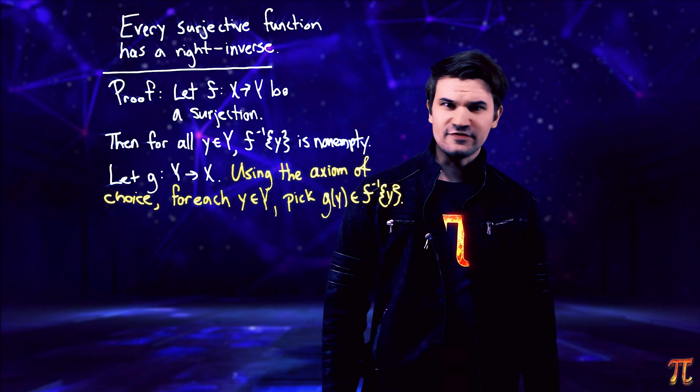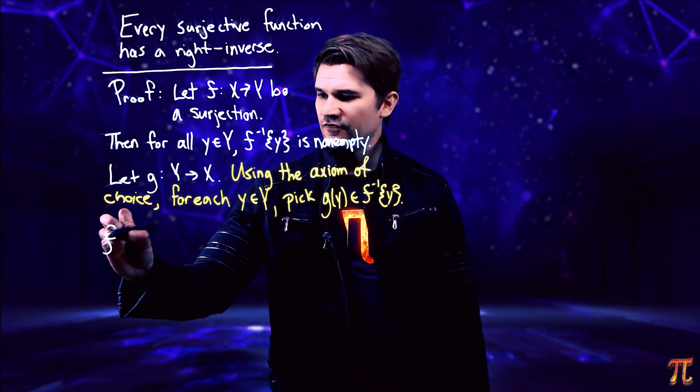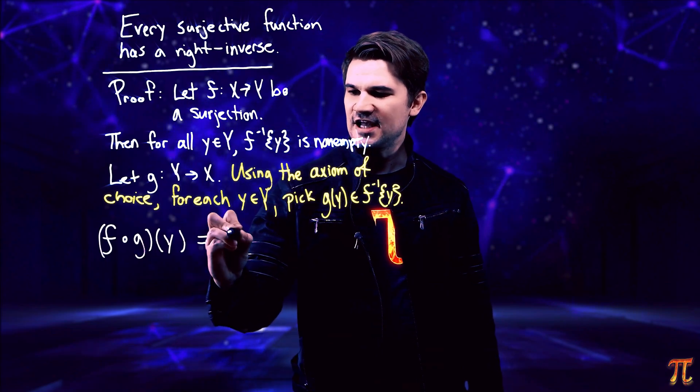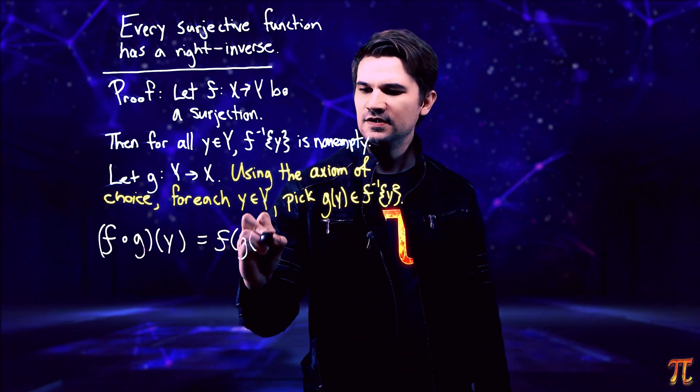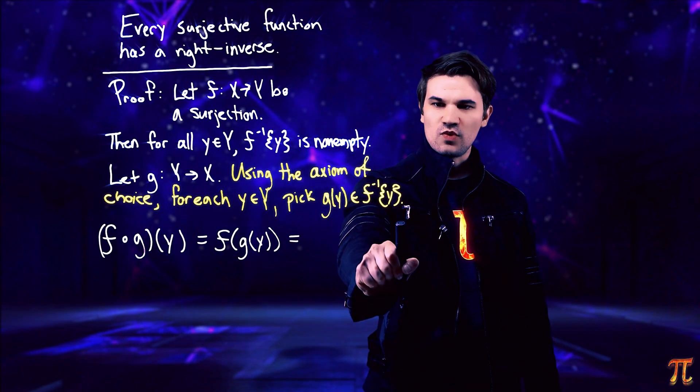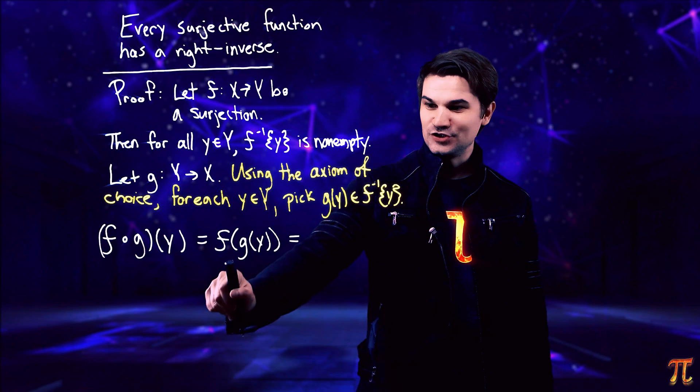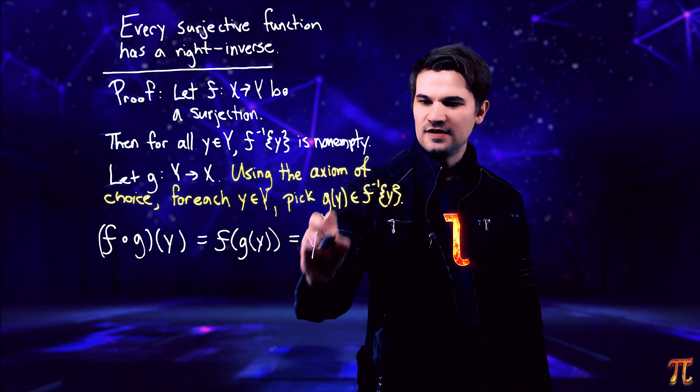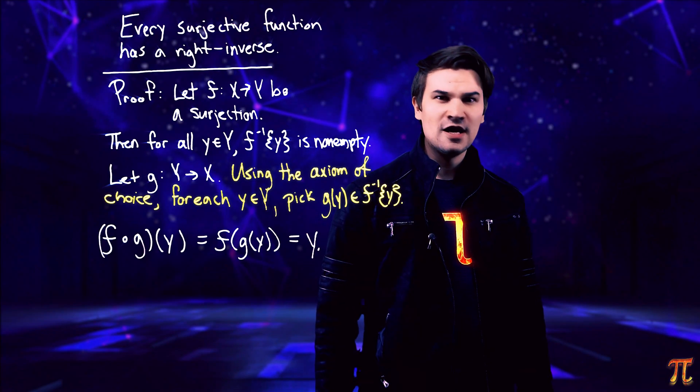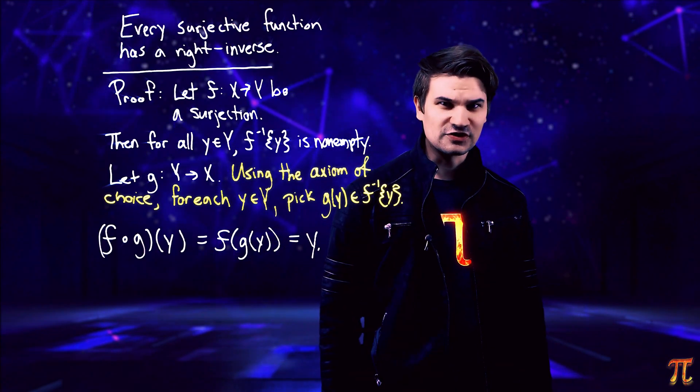So is g a right inverse of f? Well, let's see, if we compose from the right and we plug in y, we know that's f of g of y. And what do we know about g of y? We know that it lands in the preimage of y under f. So if I plug that into f, I get back y. And so, indeed, f compose g is the identity function on y, making g a right inverse of f.